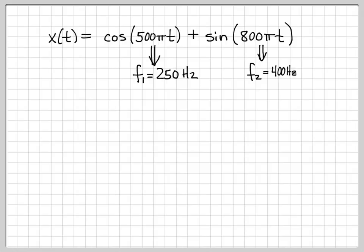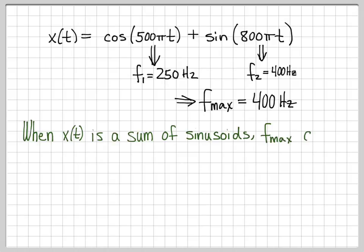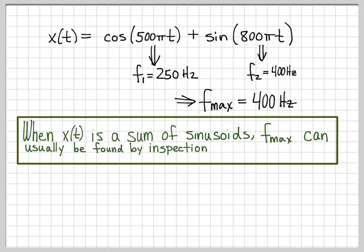So just by the fact that this is a sum of sinusoids, knowing the frequency content is very simple and computing X(f) really isn't necessary. You can just look at this and figure out f_max by inspection. So that's one thing to just kind of keep in mind. If x(t) is a sum of sinusoids, f_max can usually be found just by inspecting the time domain equation. And that's something good to keep in your mind.